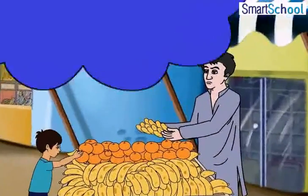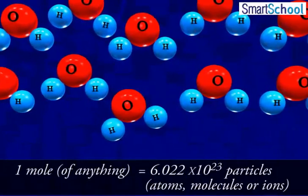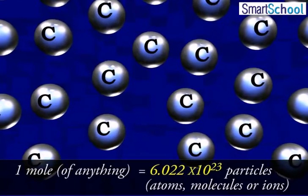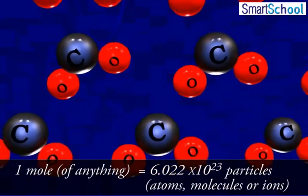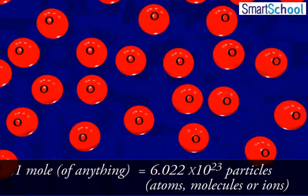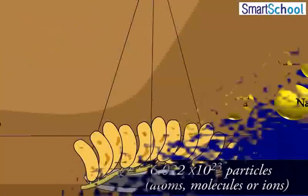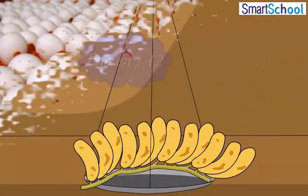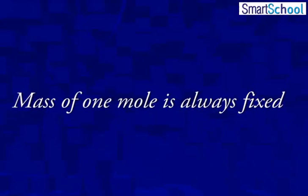Just as 1 dozen is equal to 12 articles, 1 mole of anything is equal to 6.022 × 10²³ particles — it may be atoms, molecules, or ions. The advantage of a mole over a dozen or a gross is that the mass of 1 mole of a particular substance is always fixed.